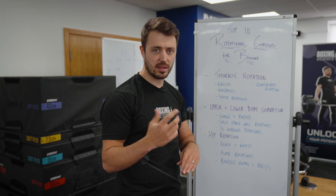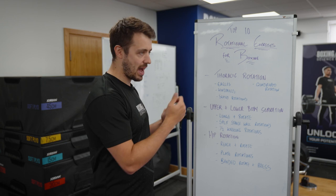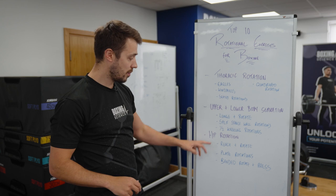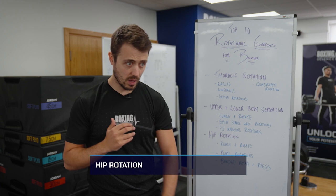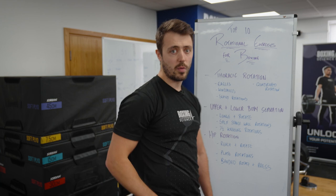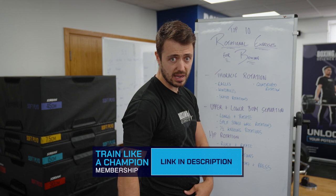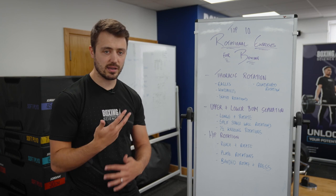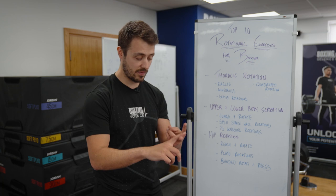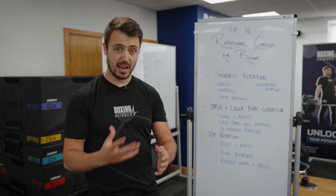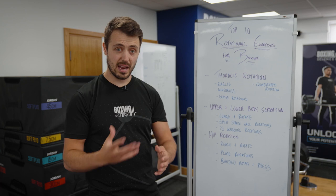While we've focused on upper body rotation and trunk rotation with a stable lower body, we also need to improve hip rotation. Hip rotation is important to transfer force through the kinetic chain from the lower body up to the upper body. Many boxers are quite tight in their hips and ankle joints, which limits optimal hip rotation and hip extension into their punches. In a rotational context we can address this through reach and rotate, plate rotations, and banded rotate press.